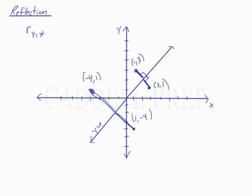So when we reflect over the line y equals x, (x,y) simply becomes (y,x). We just switch them.